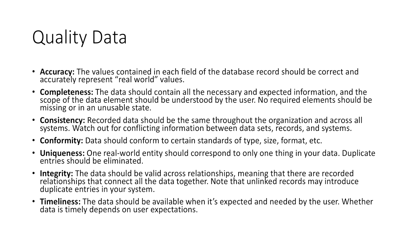Uniqueness: one real-world entity should correspond to only one thing in your data — duplicate entries should be eliminated. For example, if you have a company record with the name 'Dunkin Donuts' and another with the name 'Duncan,' one record should be deleted, ideally the one that doesn't reflect the preferred name. Integrity: the data should be valid across relationships, meaning that there are recorded relationships that connect all the data together. Note that unlinked records may introduce duplicate entries in your system — for example, if you have an address recorded in your database but there is no person, company, or other relationship associated with it, the data is invalid and is considered an orphaned record. Timeliness: the data should be available when it's expected and needed by the user — for example, a hotel booking site should update availability records in real time, while a billing system may only need to update once per day.